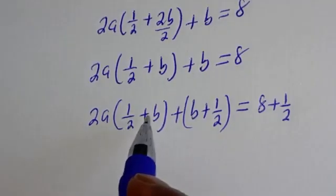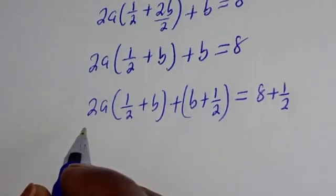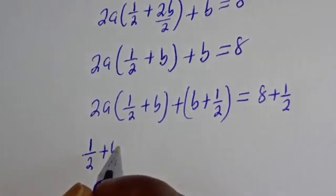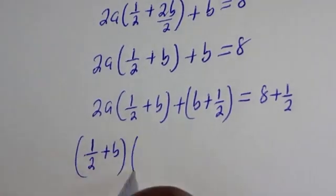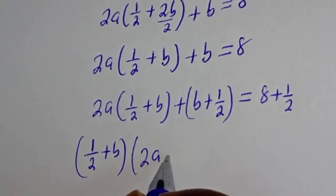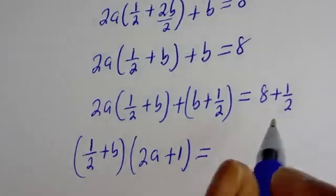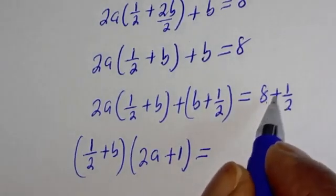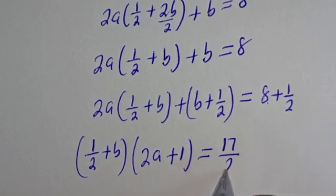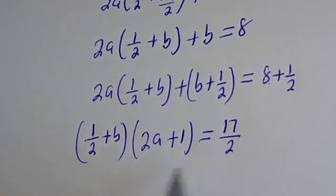Now 1 over 2 plus B is common. Let's bring it out. So this is (1 over 2 plus B) bracket 2A plus (1 over 2 plus B) bracket 1 is equal to 8 times 2 is 16 plus 1, that is 17 over 2.